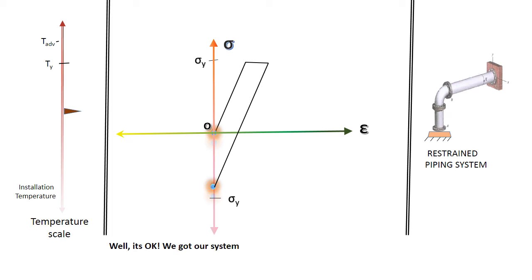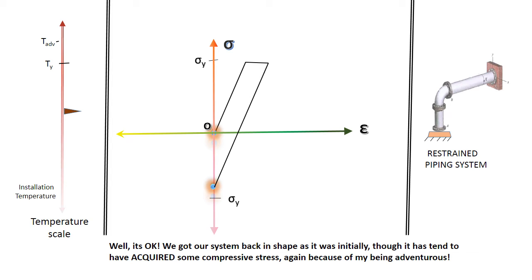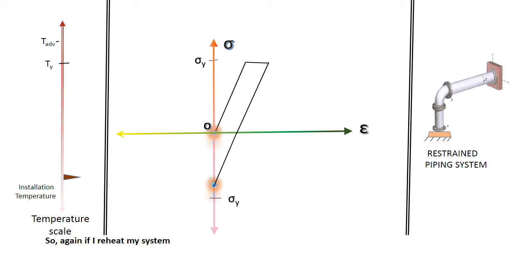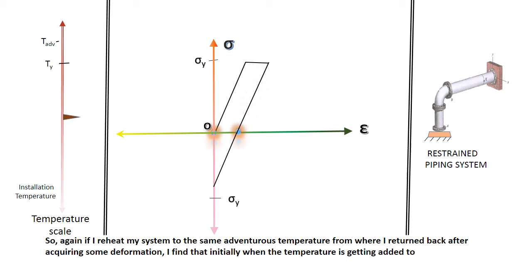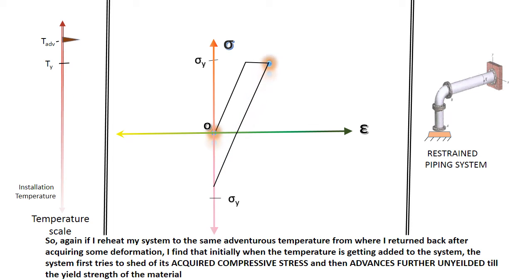Well, it's okay. We got our system back in shape as it was initially though it has acquired some compressive stress because of being adventurous. So again, if I reheat my system to the same adventurous temperature from where I returned back and acquired some deformation, I find that initially when the temperature is getting added to the system, the system first tries to shed off its acquired compressive stress and then advances further unyielded till the yield strength of the material, that is the adventurous temperature.